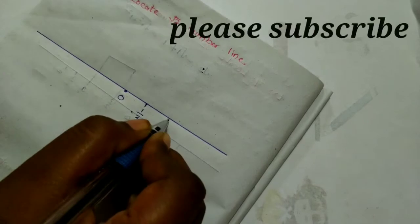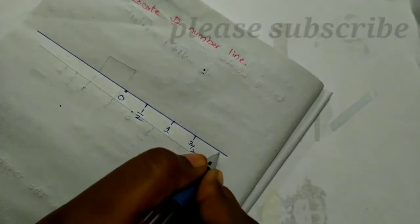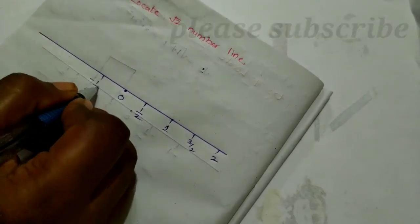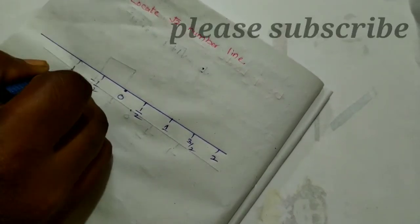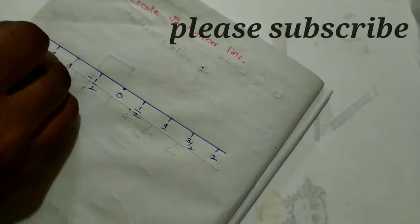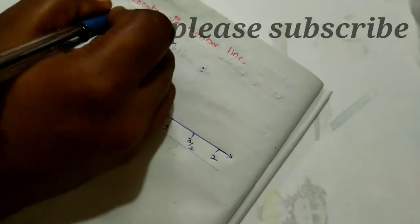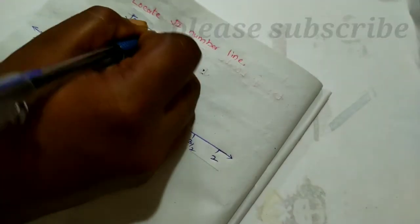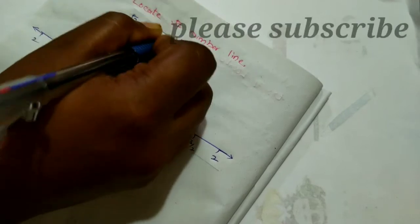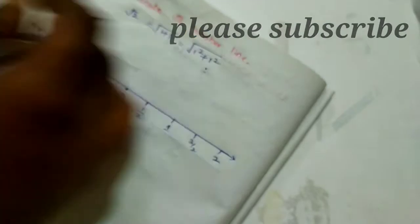Starting with 1 by 2, 1, 3 by 2, 2, and on the negative side: minus 1 by 2, 1, minus 3 by 2. Now we have root 2 using 1 plus 1. We see that 1 squared plus 1 squared equals root 2.